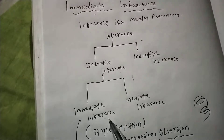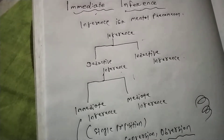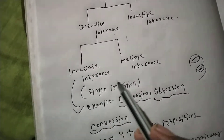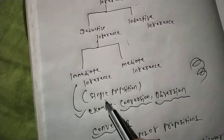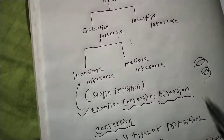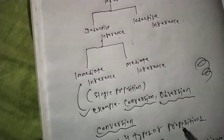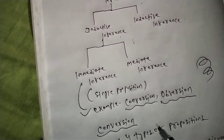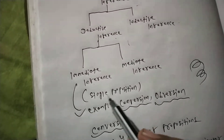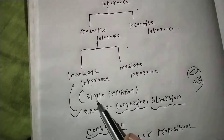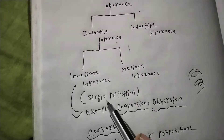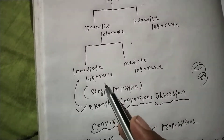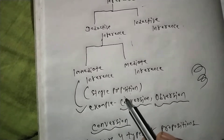Immediate inference is a form of inference in which the conclusion is drawn from a single proposition taken as the premise. So, immediate inference is drawn from a single proposition.